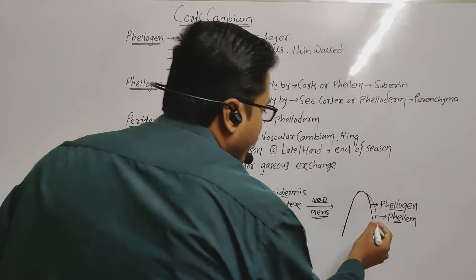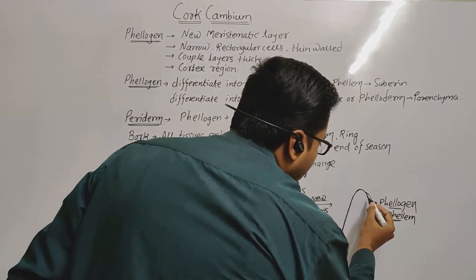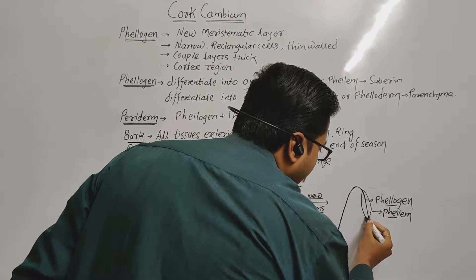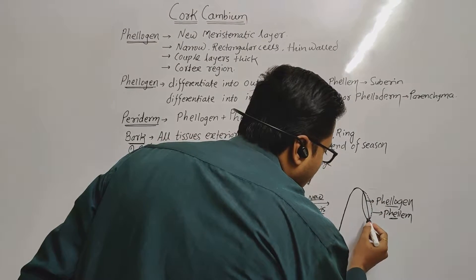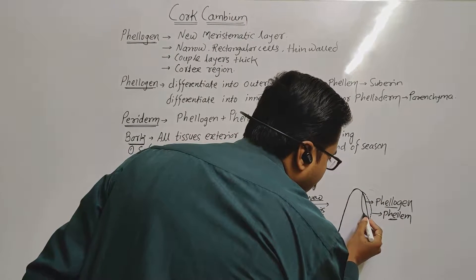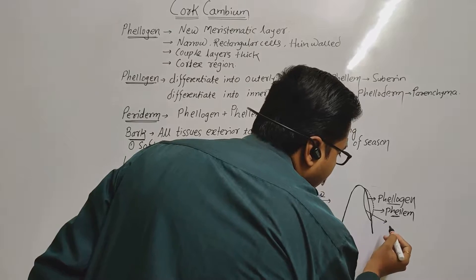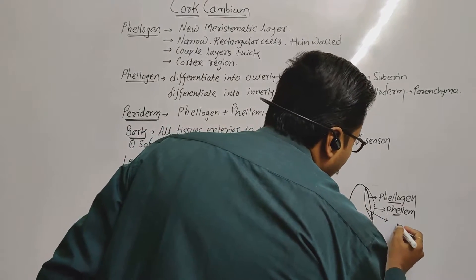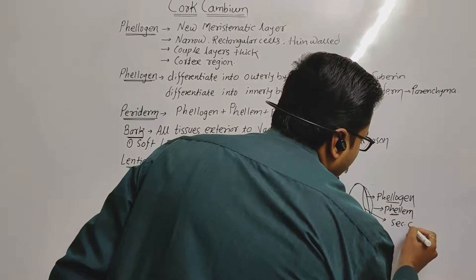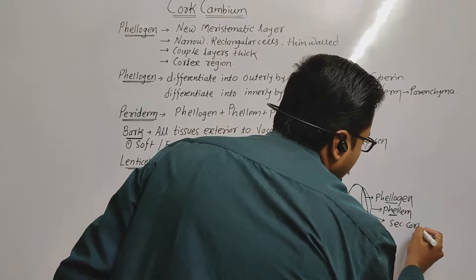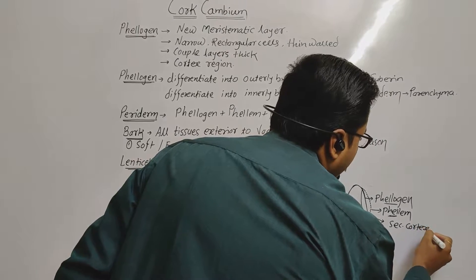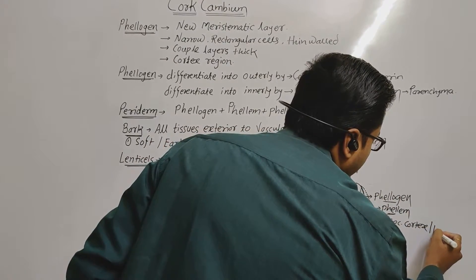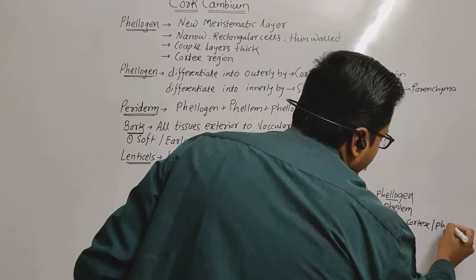When phelogen differentiates inwardly, it forms another layer present on the inside. This inner layer is known as secondary cortex, also known as phelloderm.